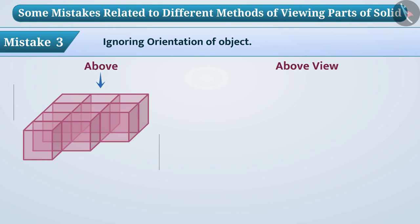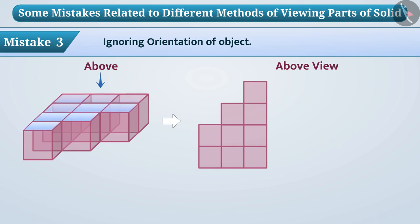In this we can see that all the squares have been taken into consideration, but this view will be obtained by looking at the object from below and not from above. In this way, children often draw exactly the opposite shape of the figure, which is wrong.